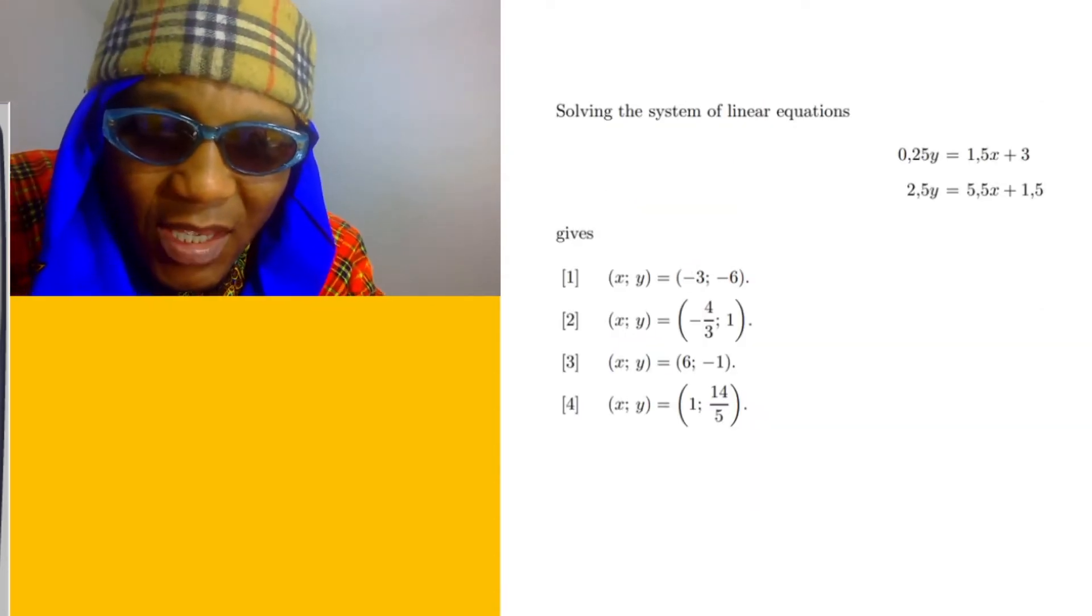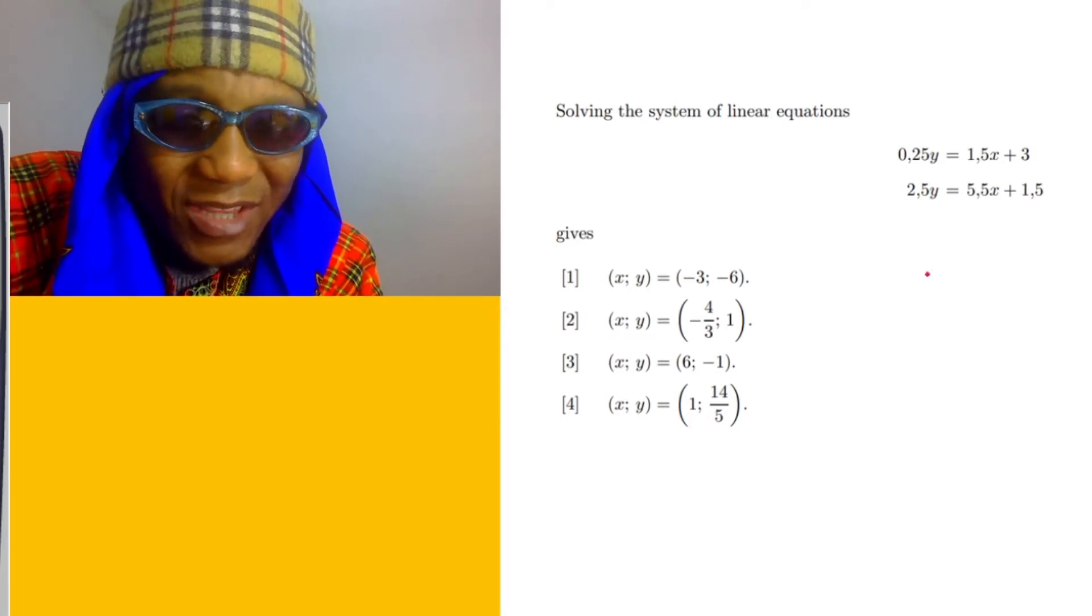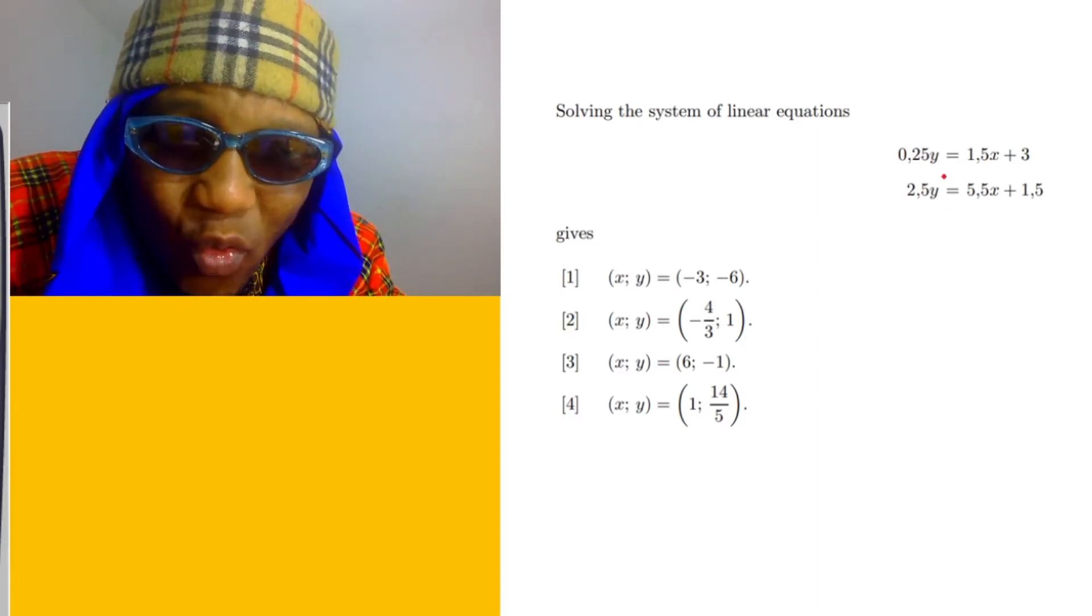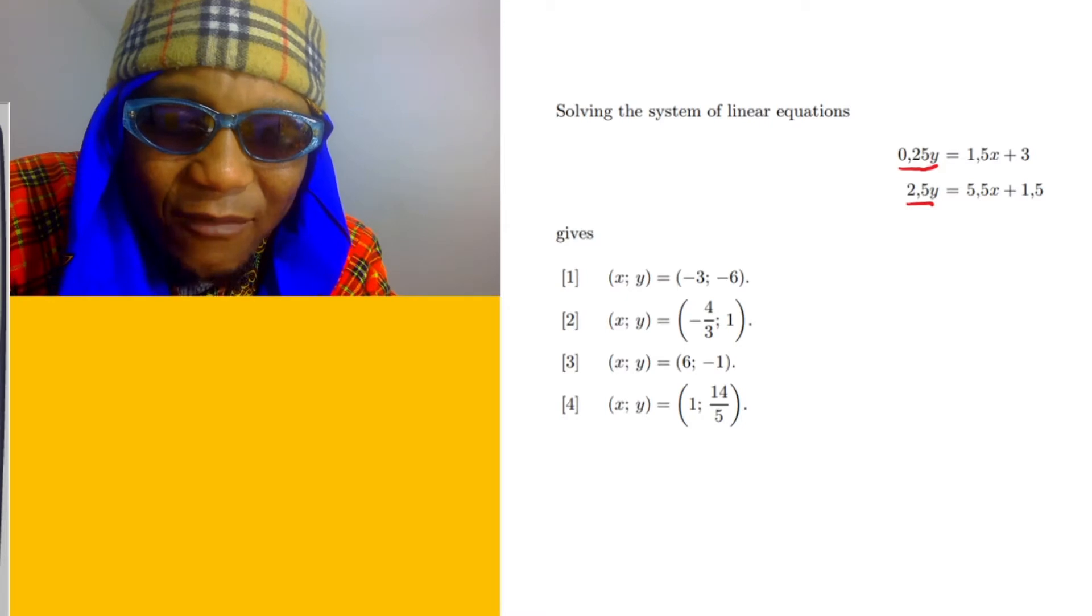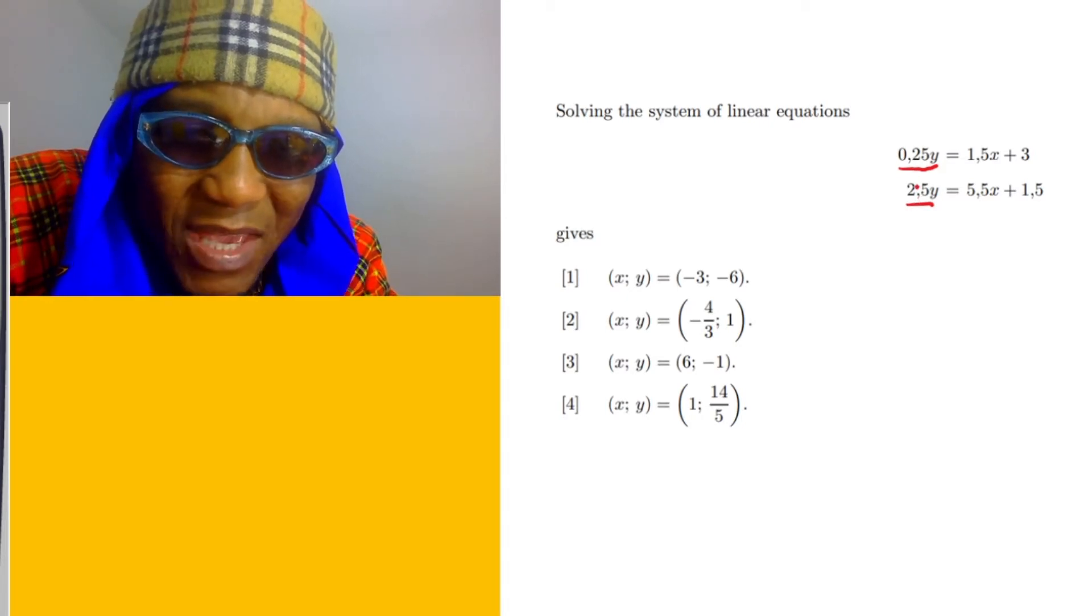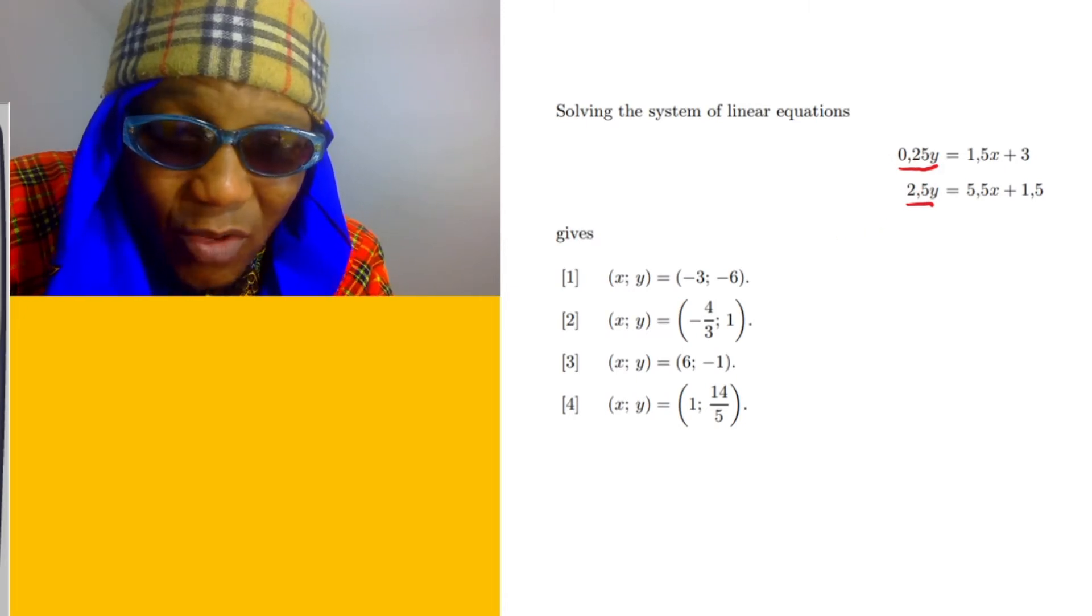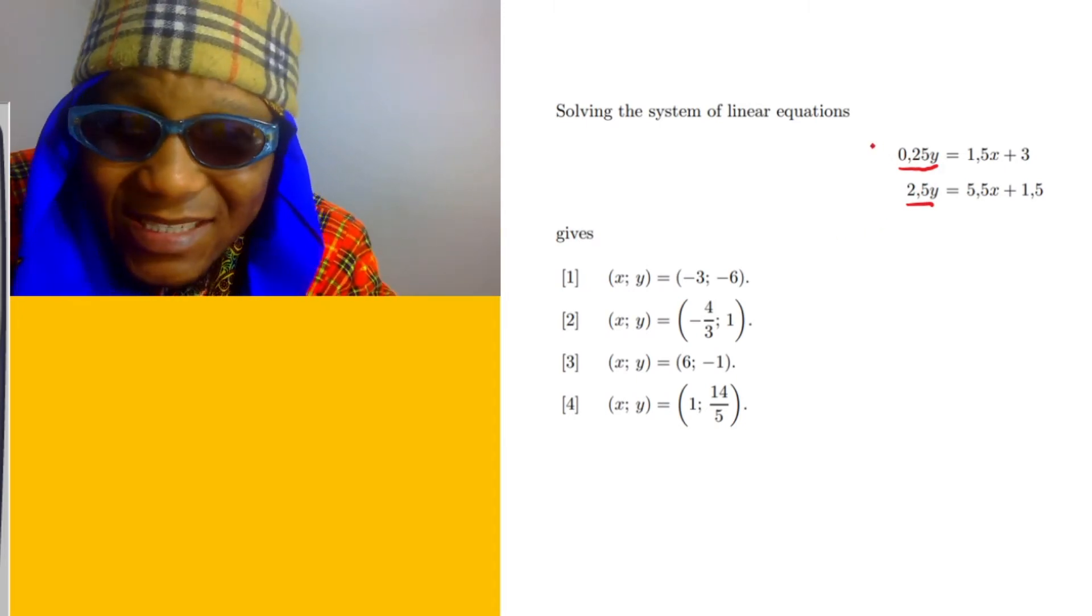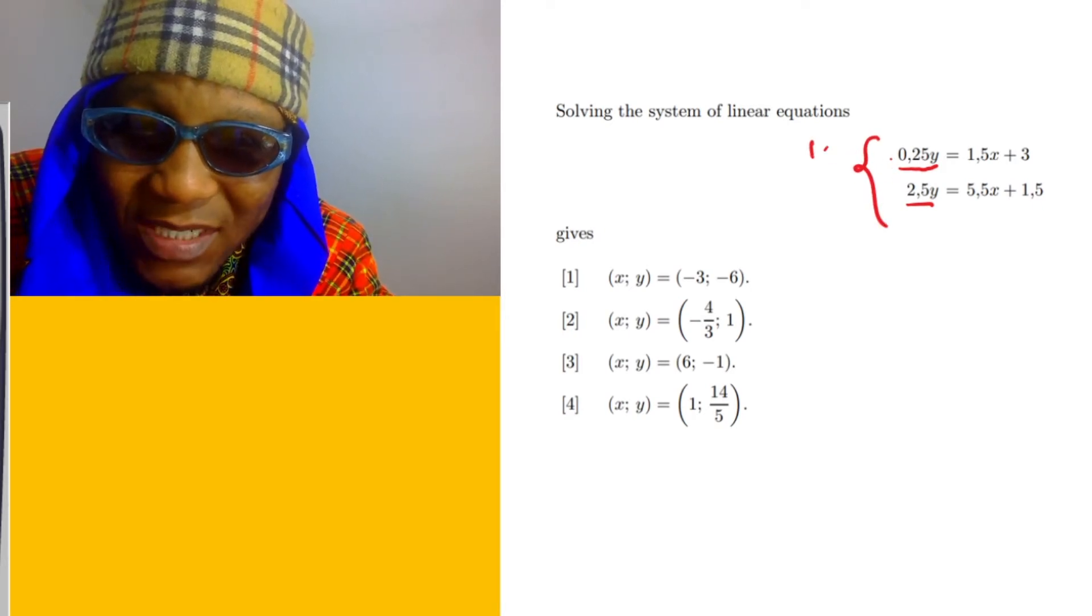Let's solve this question. This is a simultaneous equation. What you do with this type of question is try to make two variables equal. Look, this is 0.25, this is 2.5. Try to make them equal. How are you gonna make them equal? Personally, what I'm gonna do is simply multiply this by 10, because if I multiply the top one by 10, it's gonna be 2.5.